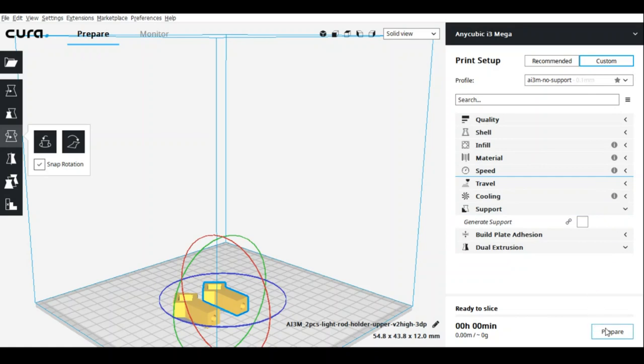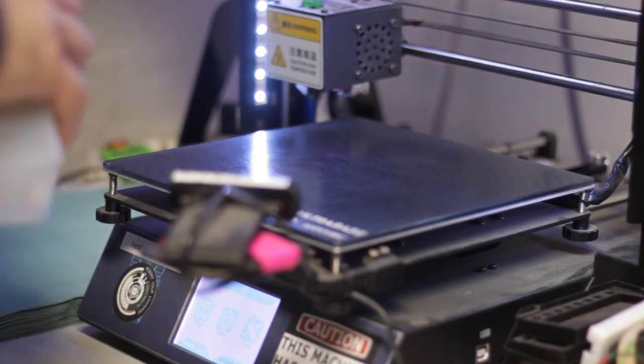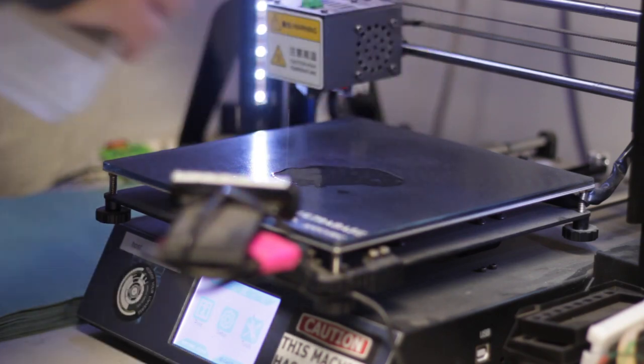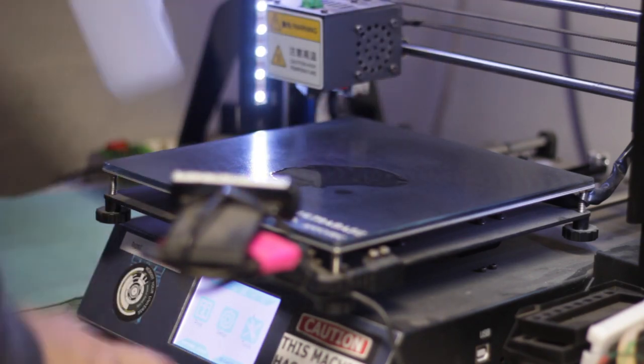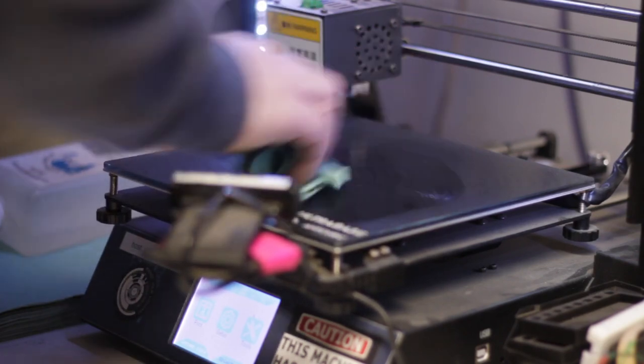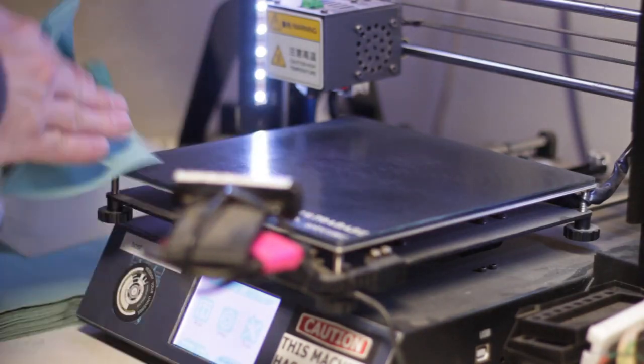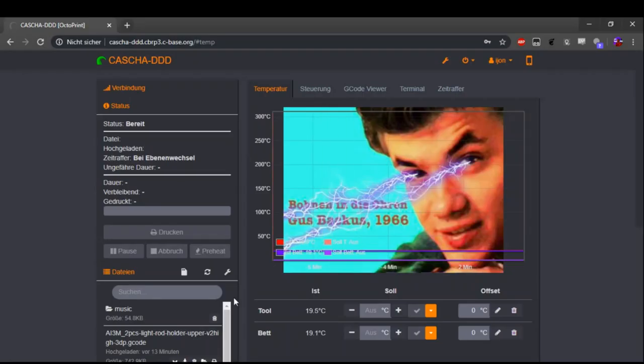Let's leave that all default and see how long this will take. 38 minutes. Sounds good. Let's do this. These print beds need to be clean before the job. They need to be absolutely spotless and fat-free, which is why I'm using alcohol. Looks good.